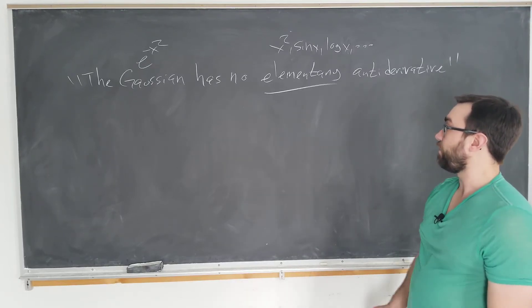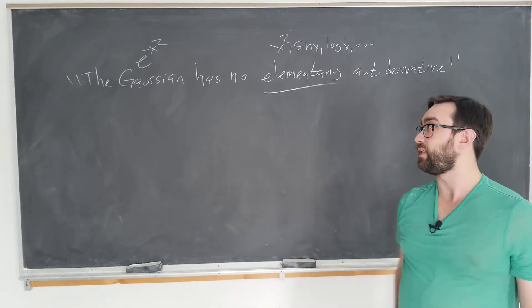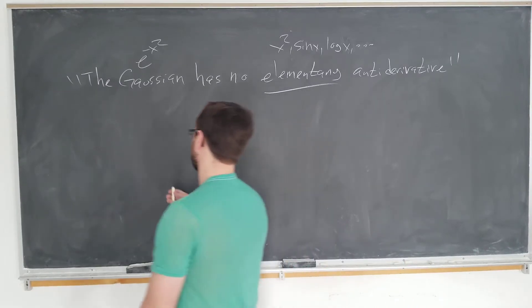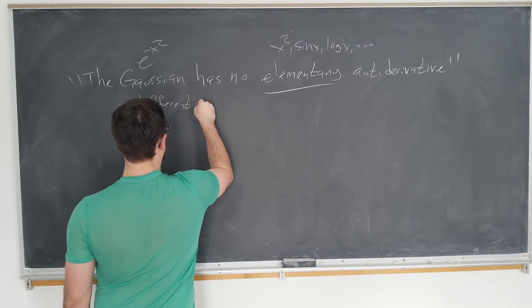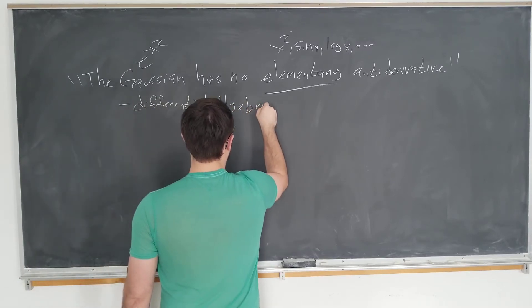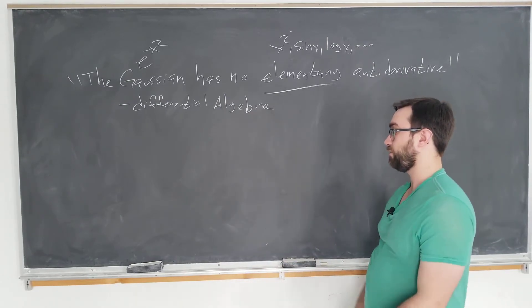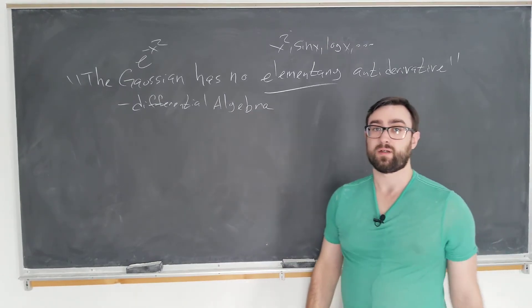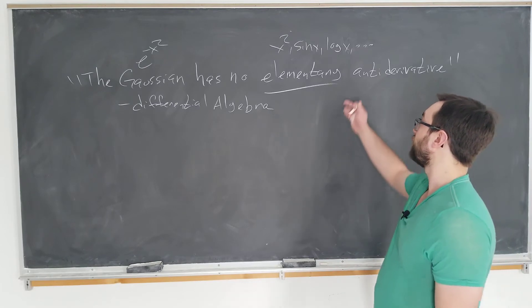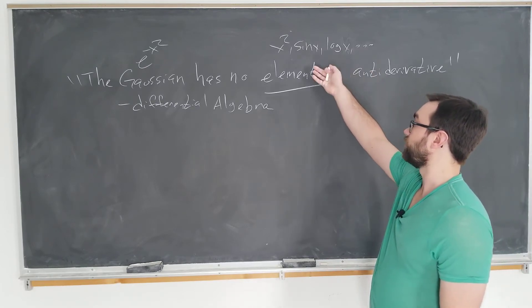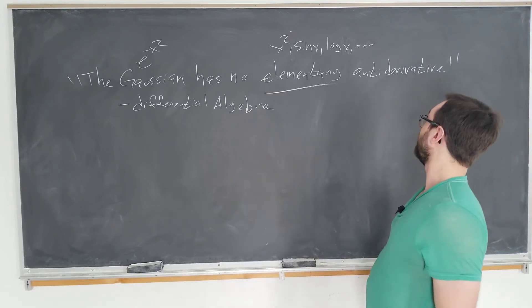So how can we prove that the Gaussian has no elementary antiderivative? Well you would need to be in graduate school taking a course called differential algebra. I myself have not taken this course and I don't know how the proof goes. But if I had to guess I would assume it works similarly to how you talk about the quintic formula having no closed form. It would show that if it has a solution it can't be any linear combination of these functions that we define to be elementary.